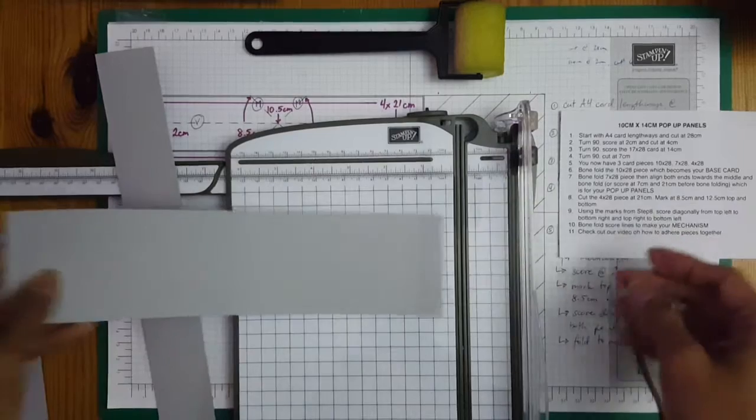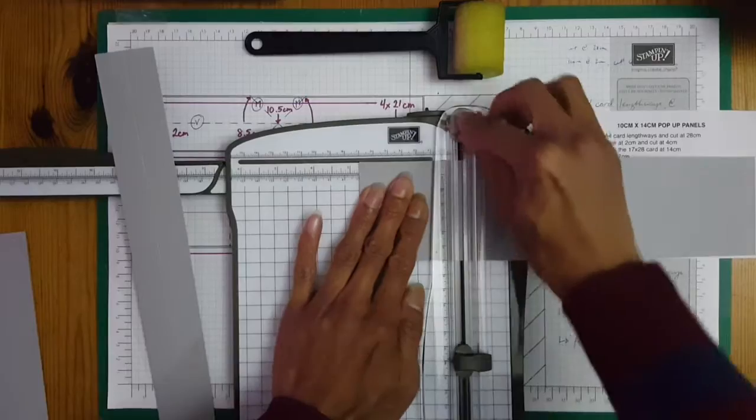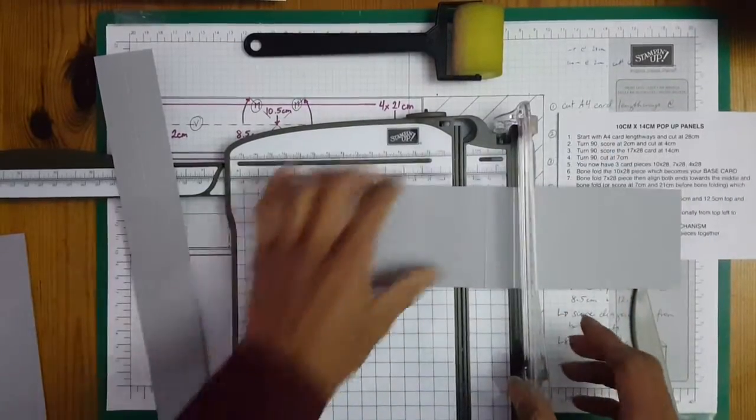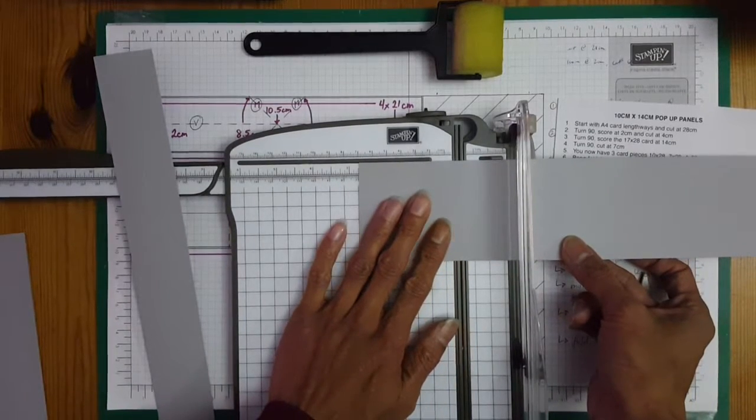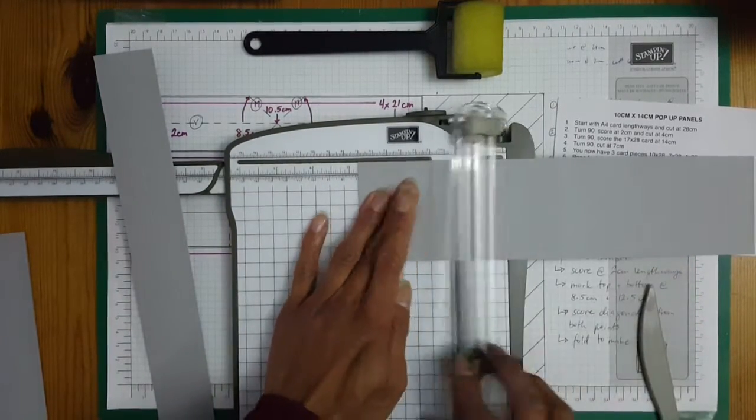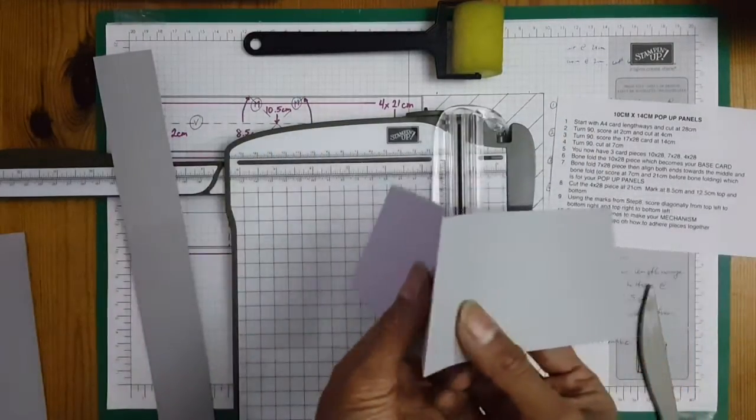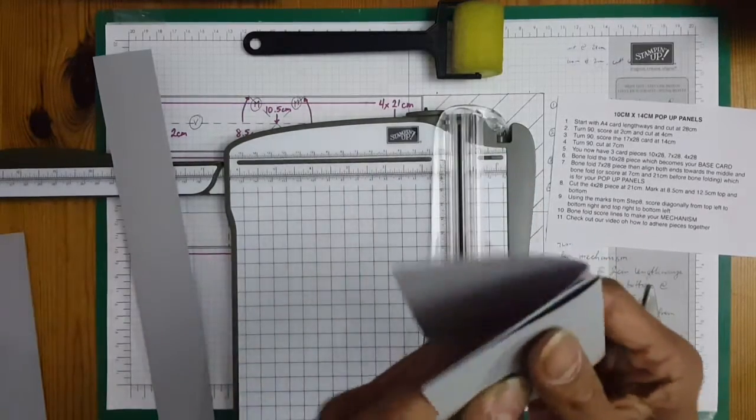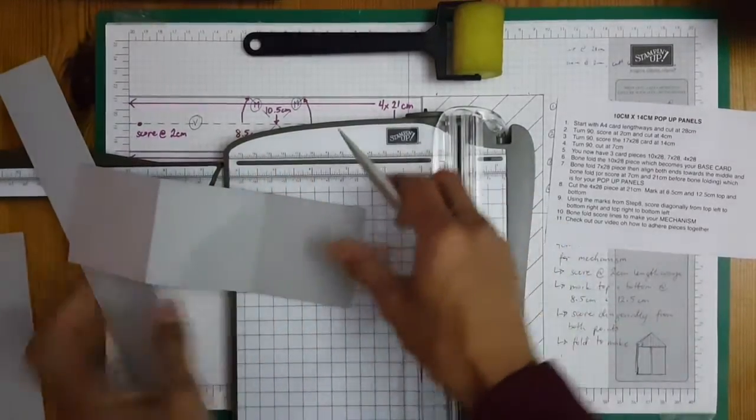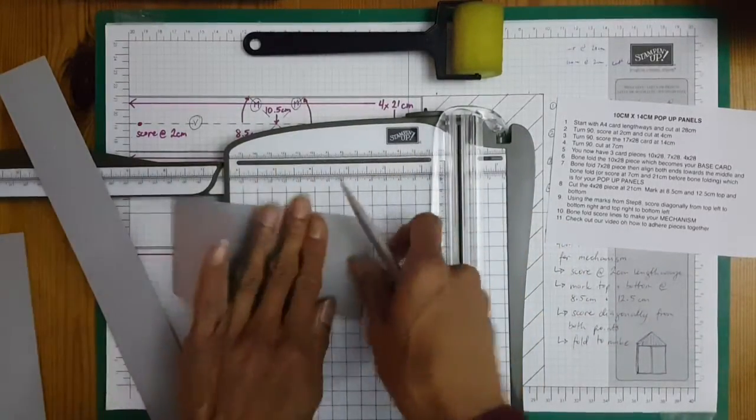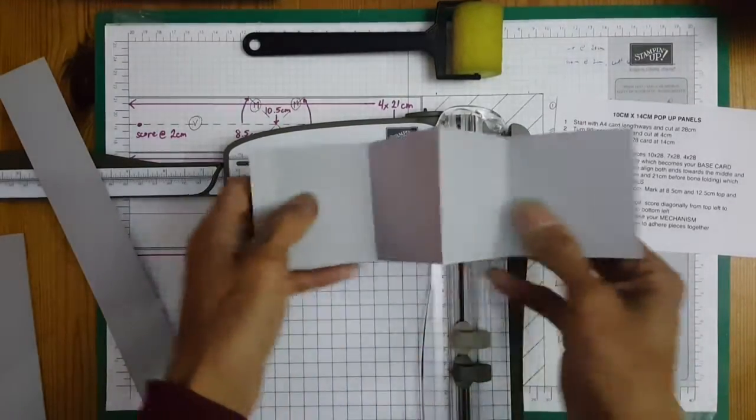With this one, just score at 7, and then turn it round again on the other end for another 7 centimeters. So you'll have mountain, valley, and valley. Just use your bone folder. So it should look like that.